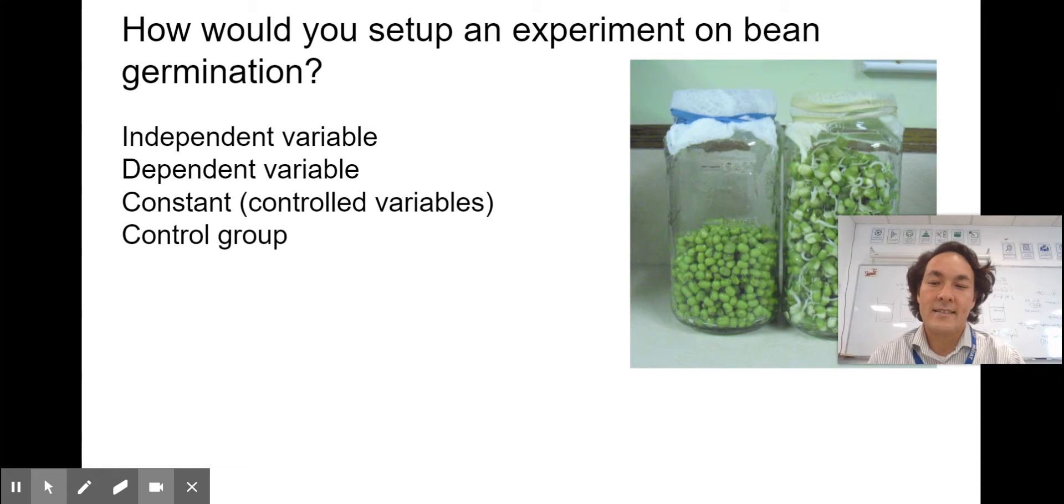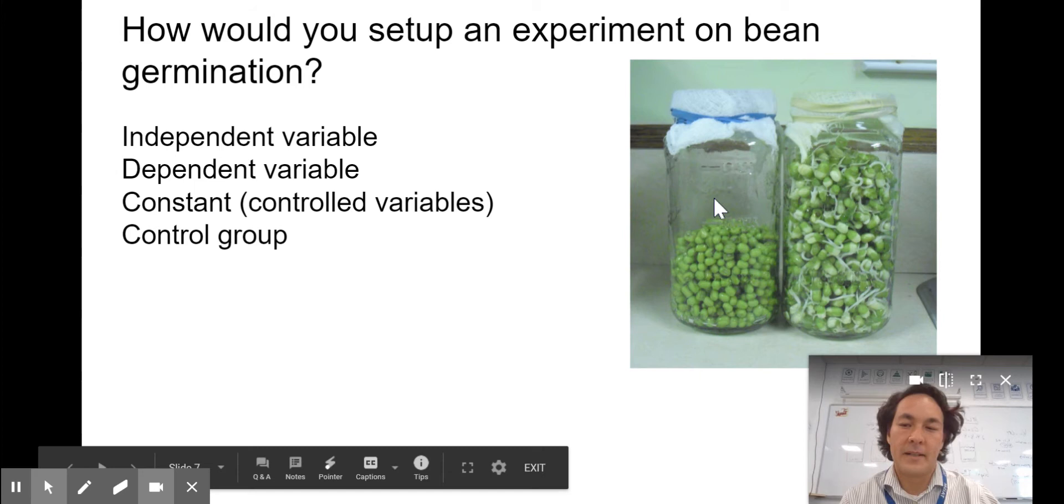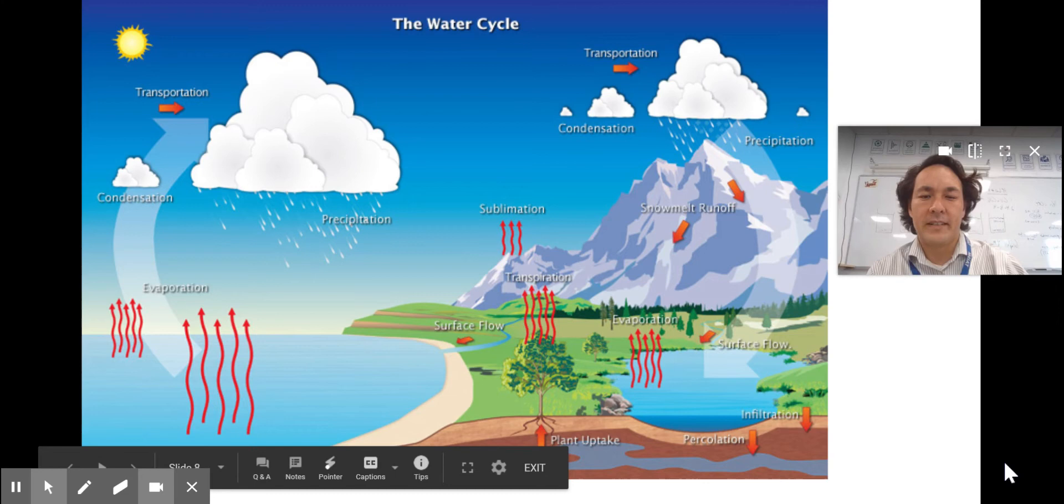Think about your own experiments. When we get back together in hybrid mode or whenever I can see you, we'll do some real experiments in class. What would be an experiment on bean germination? As we go into unit two in the California NGSS, it'll be about photosynthesis and respiration, the movement of carbon between reservoirs.